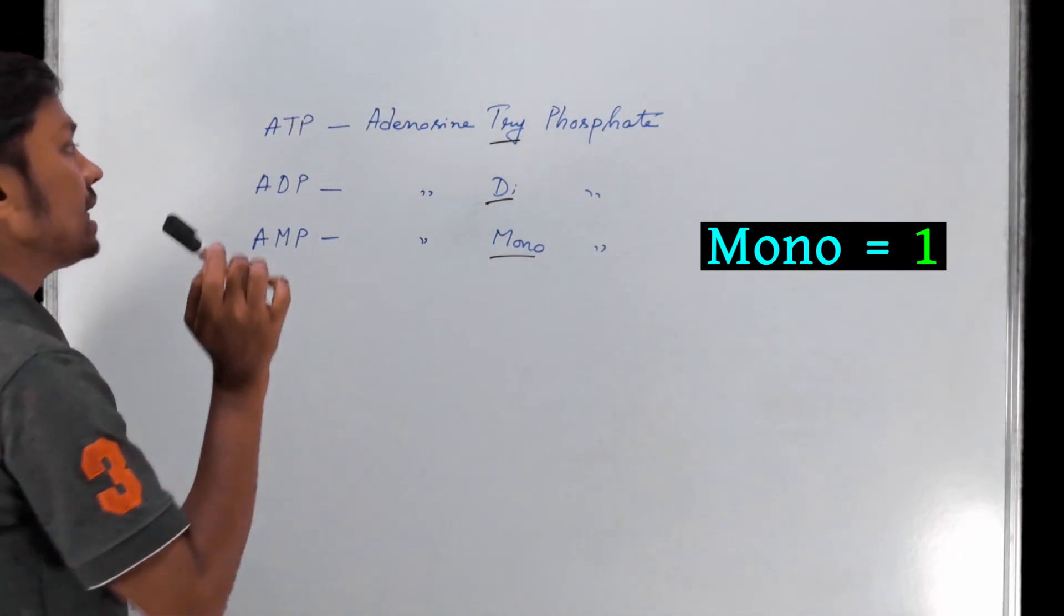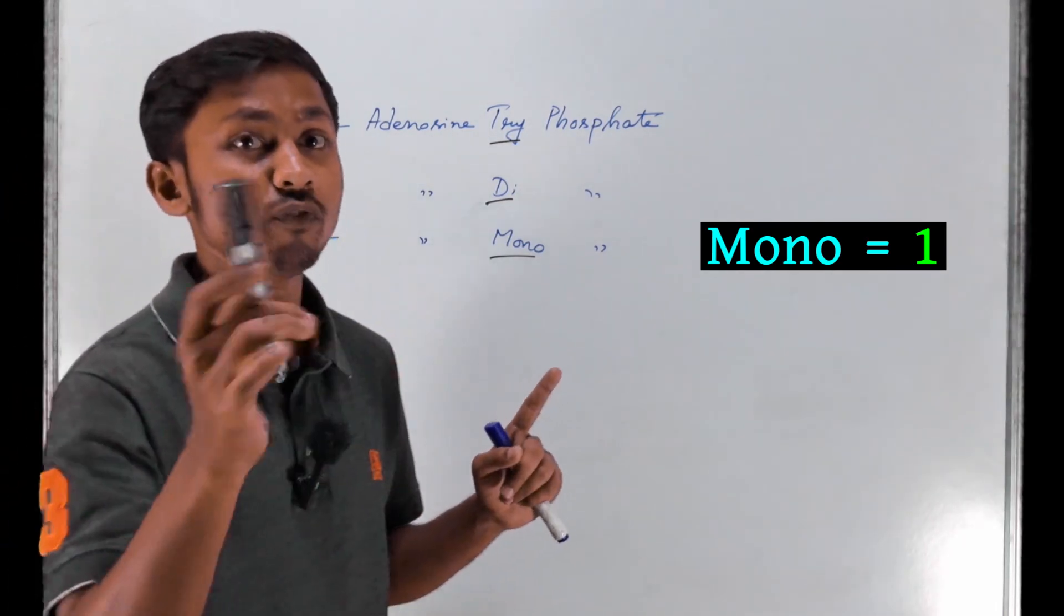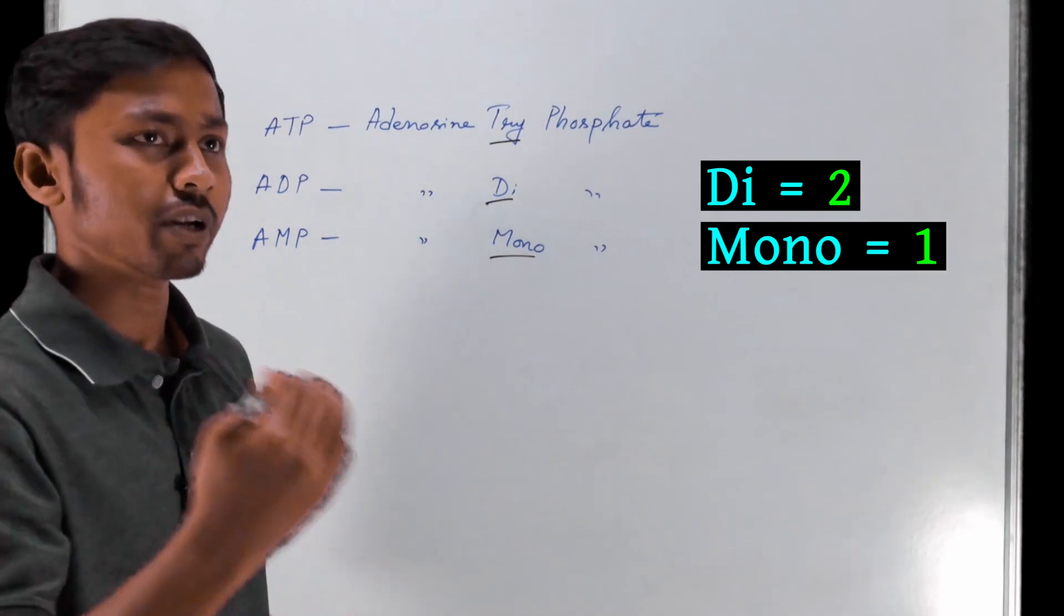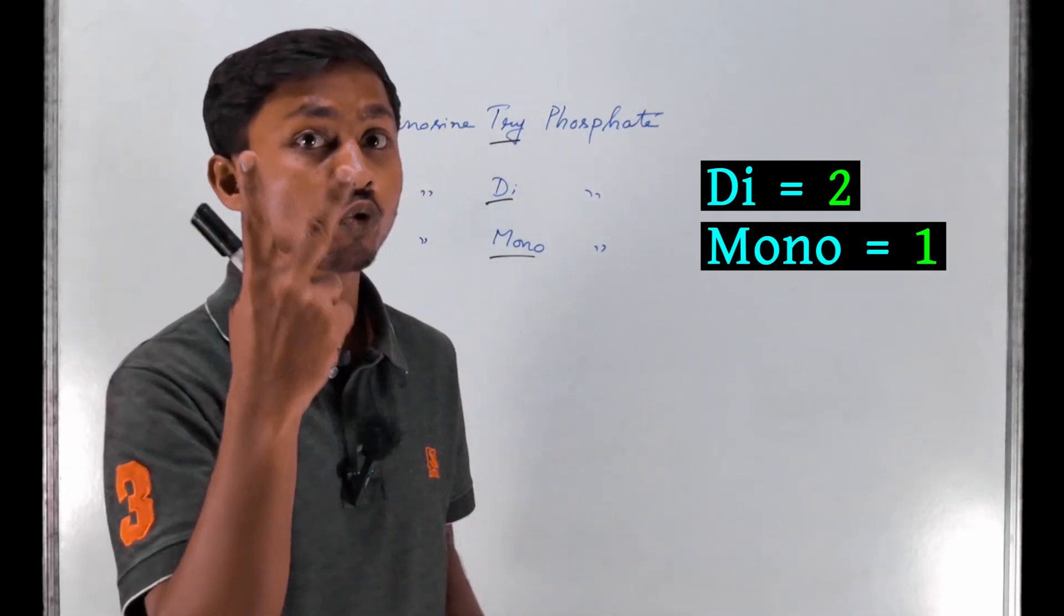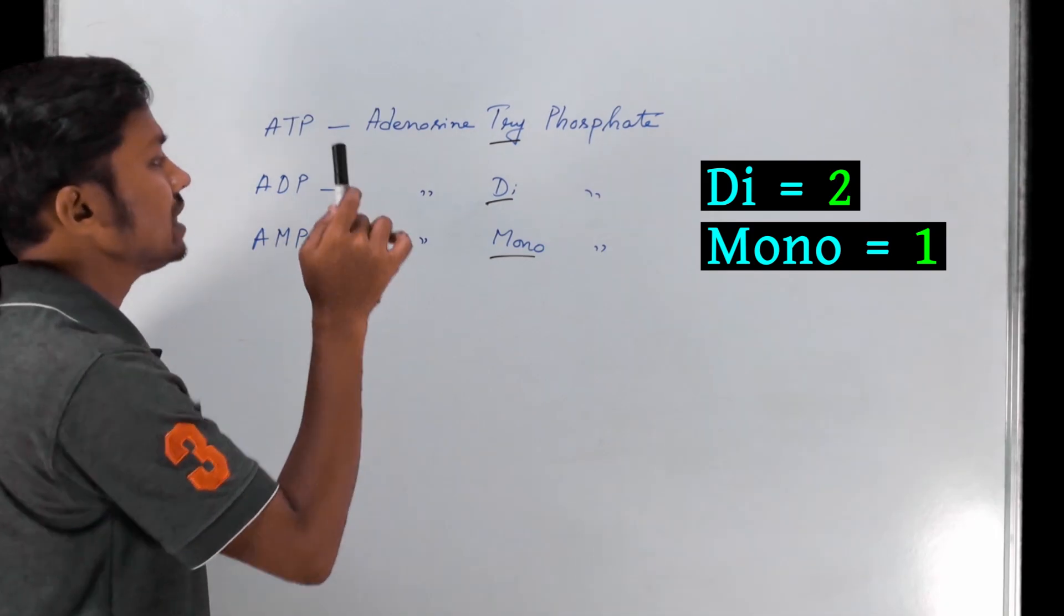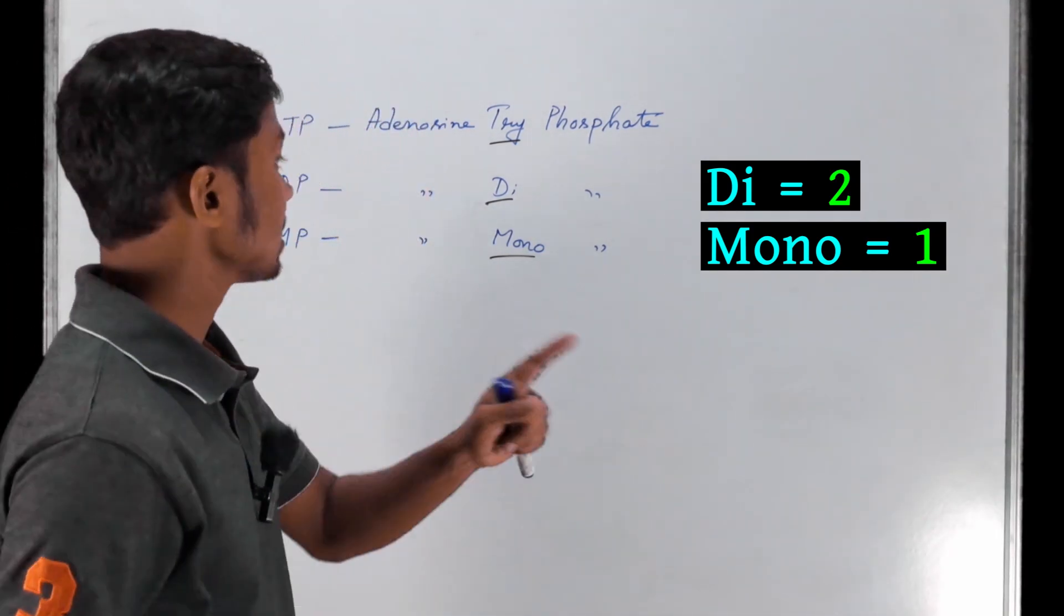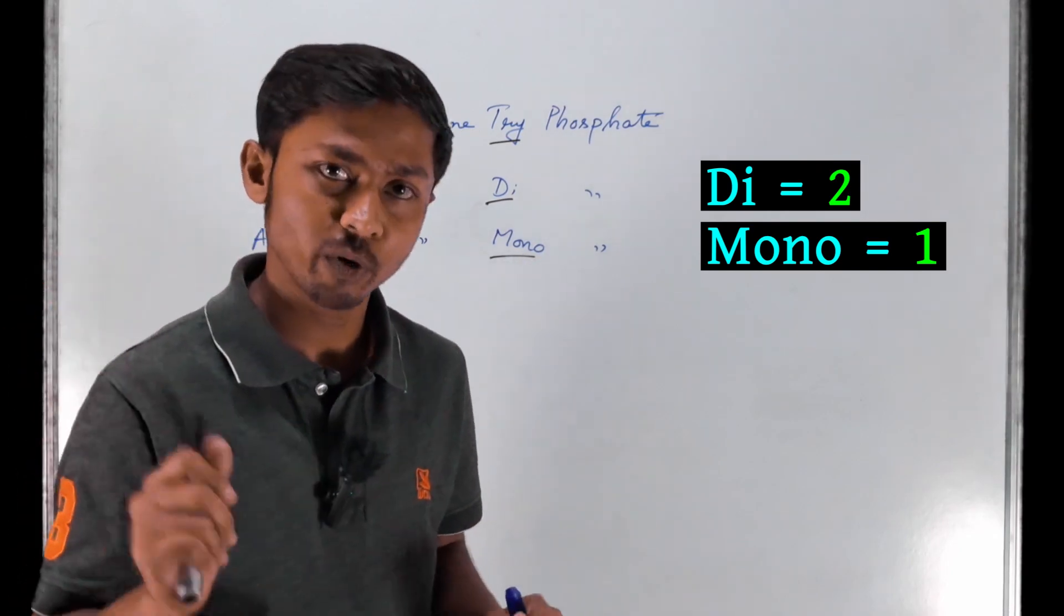Then ADP - ADP means adenosine diphosphate. Di means two. So basically it's an adenosine group with two phosphate groups attached - that's adenosine diphosphate.